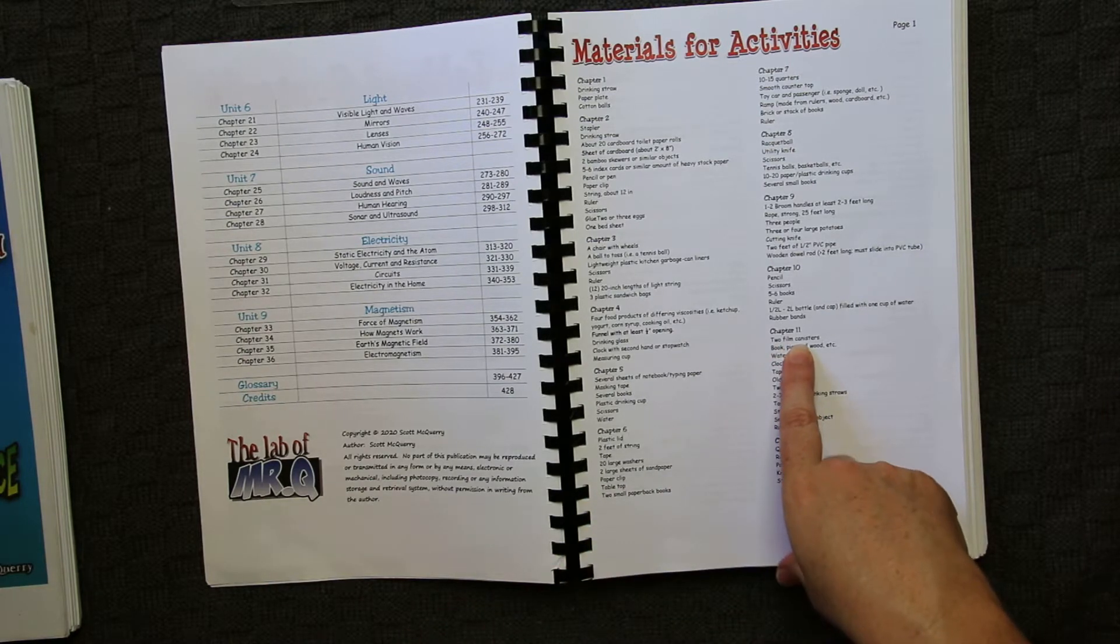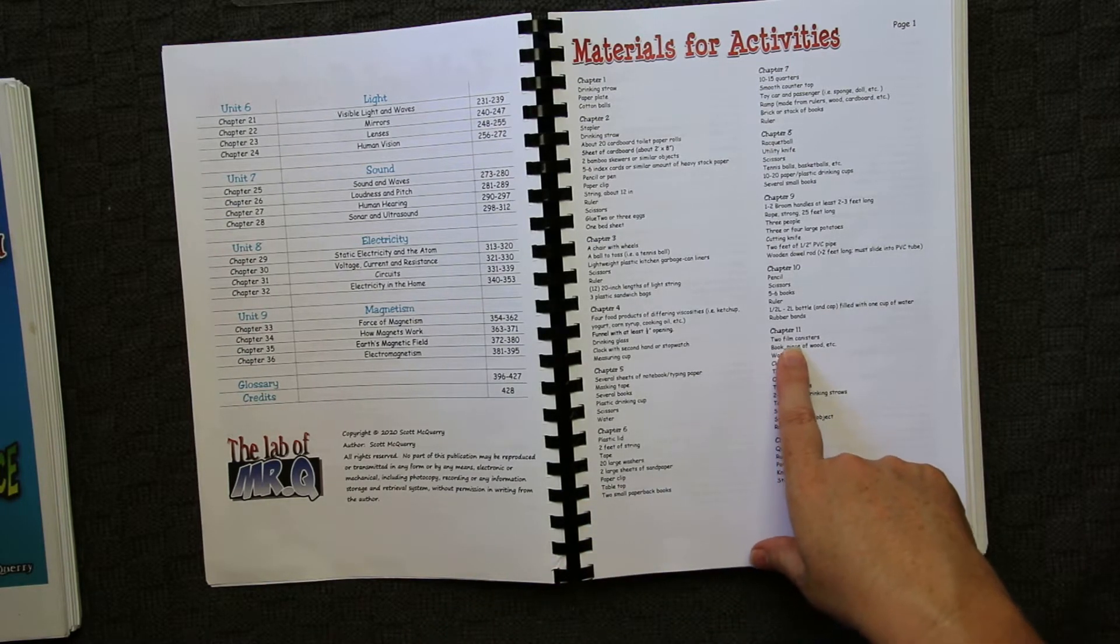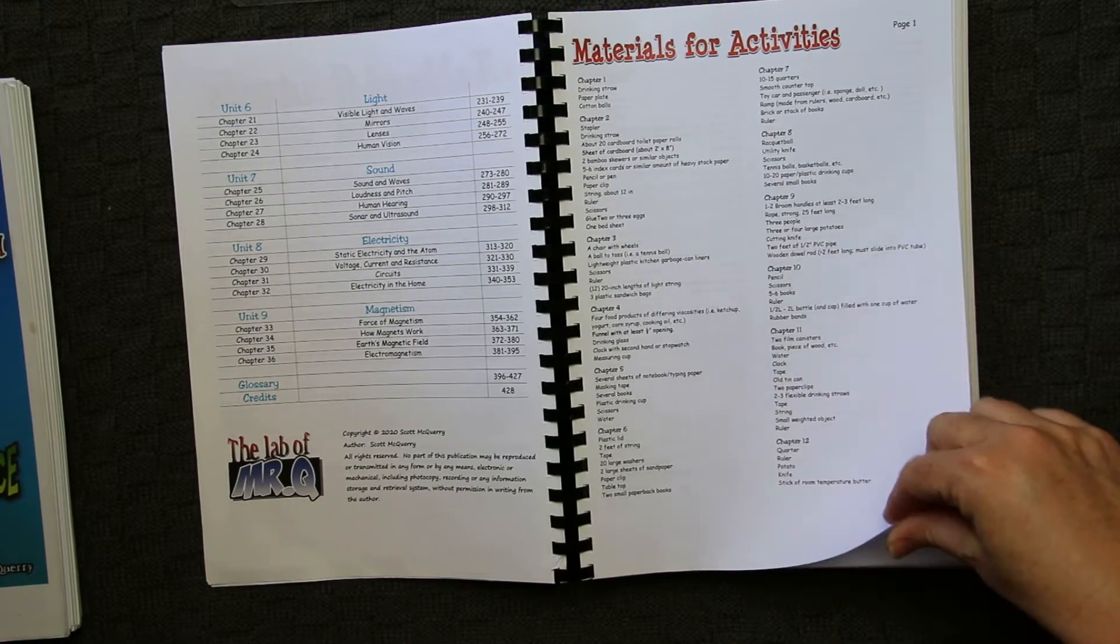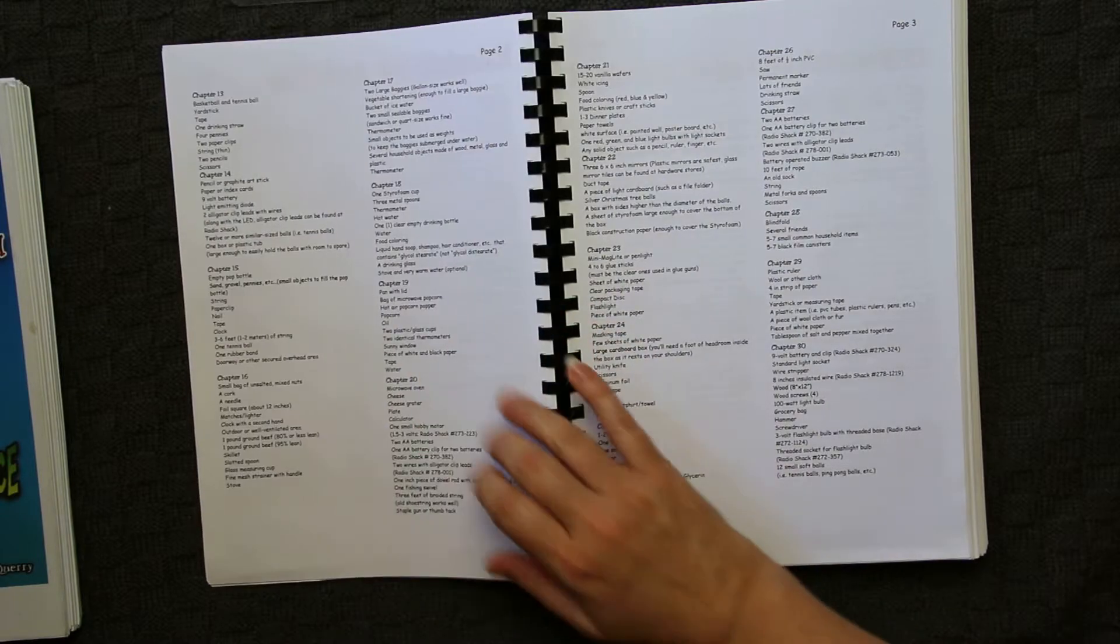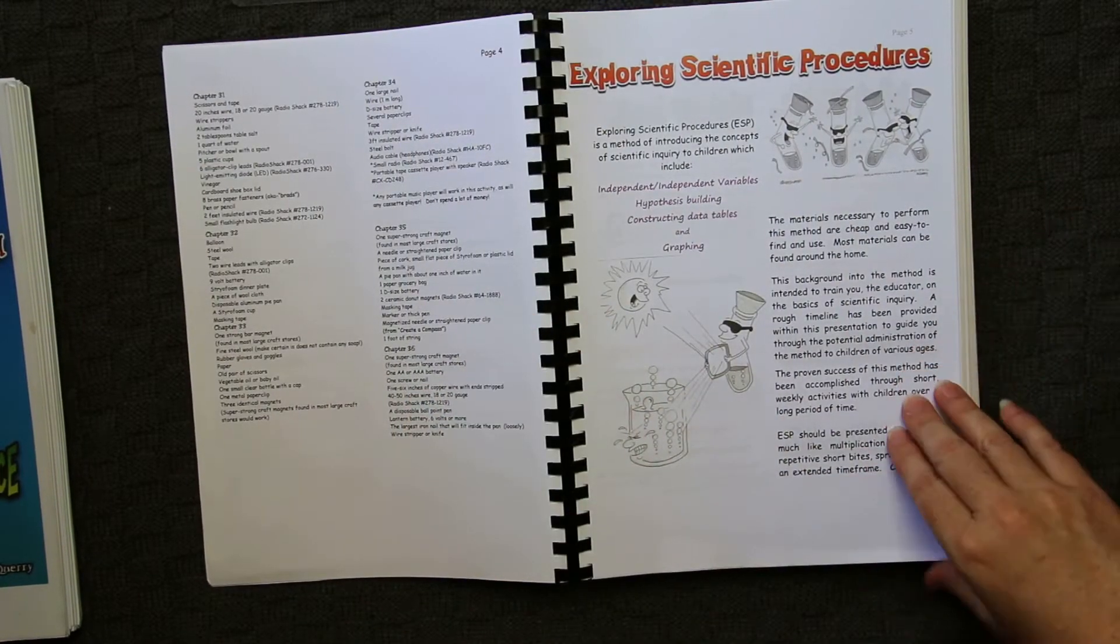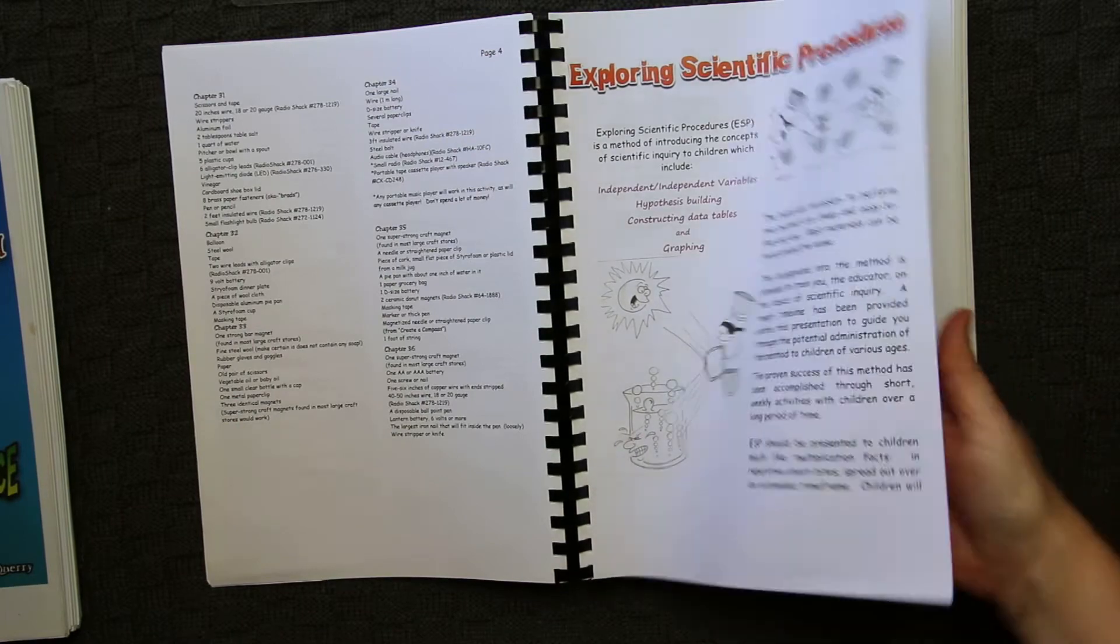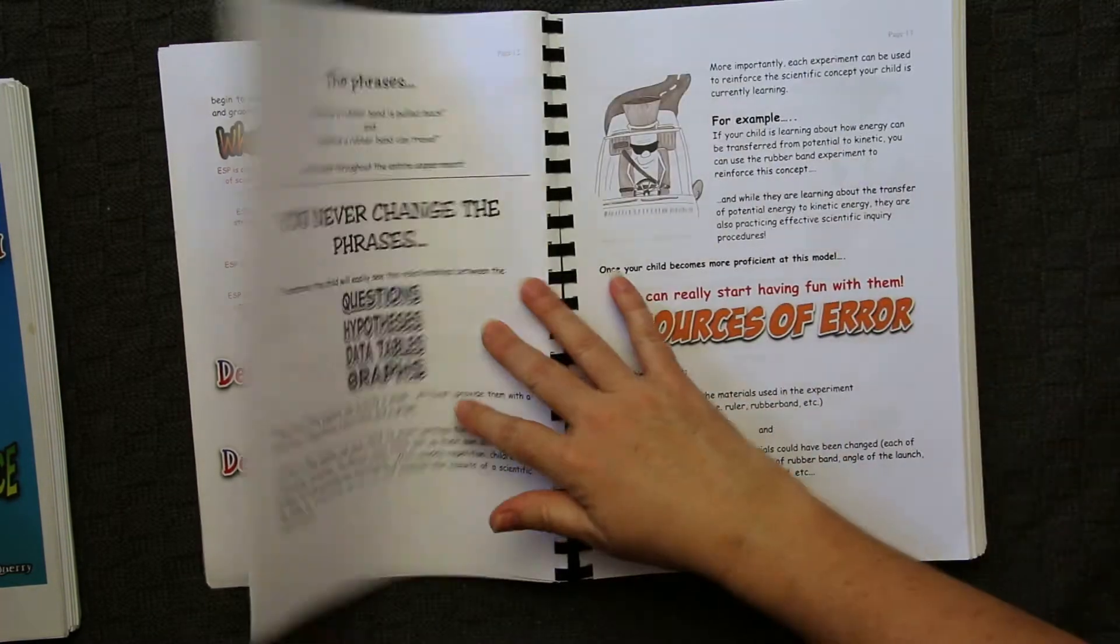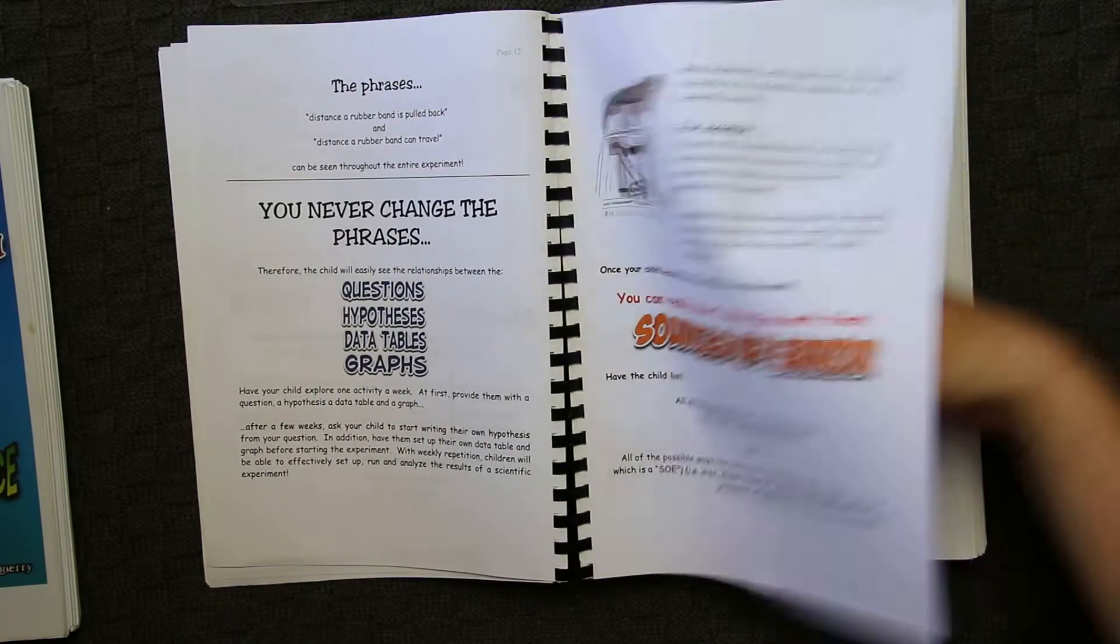We have found the odd thing that is pretty much impossible to find today. I don't know about in the US, but film canisters. Sometimes you can replace them with something else, but there has been the odd time where, you know, no one's using film canisters anymore. So that probably does need to be updated. But the bulk of the materials required in here is pretty standard type items that most of you would have around the house.